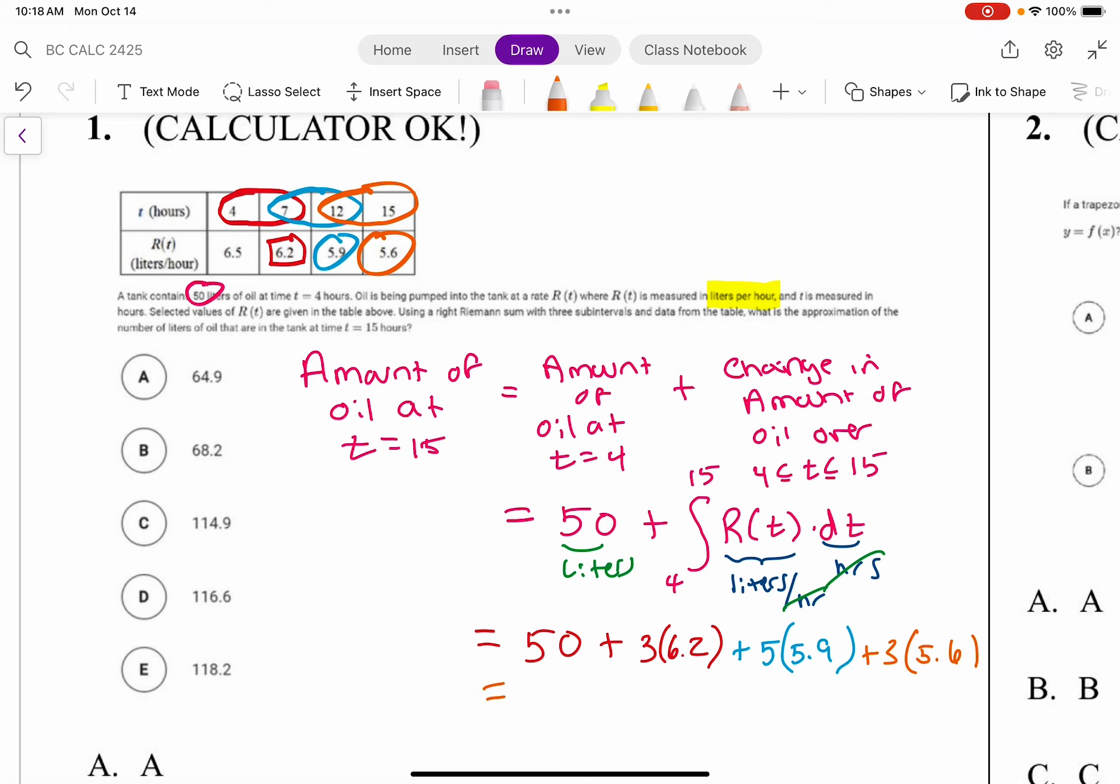Okay, and then we just punch this into the calculator: 3 times 6.2 plus 5 times 5.9 plus 3 times 5.6.